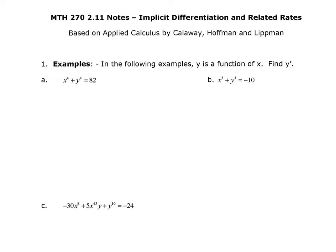Essentially, you're taking the derivative of both sides. However, there's a little bit more work to do. You're still trying to find y prime, the derivative of y. If we look at the left side and the right side of this equation, there's one important thing to keep in mind: y is a function of x, and we don't know what that function is. Whenever we take the derivative of y, we have to think of it like we do with the chain rule.